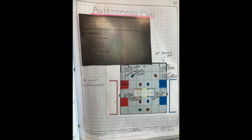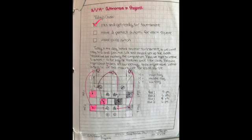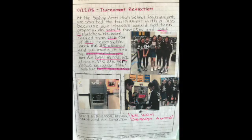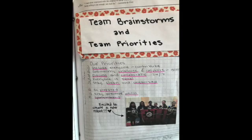It is also important to include documentation of your autonomous plan and your coding. Using a picture of the field to show the movements you plan to code is a good idea. Once you go to a tournament, it's a great idea to reflect on what happened. After their first tournament, they went back to the drawing board, came up with new priorities based on what they learned, and were then ready to design their second robot — their second iteration for the game Turning Point.